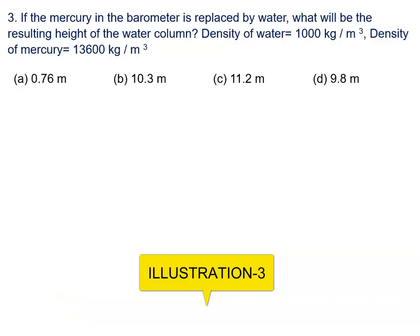If the mercury in the barometer is replaced by water, what will be the resulting height of the water column? Density of water and density of mercury is given to us.